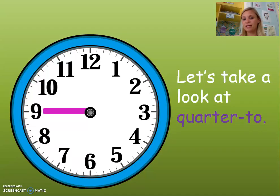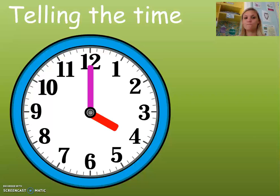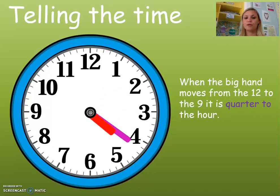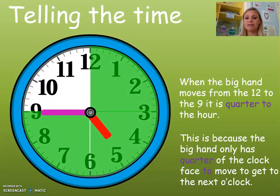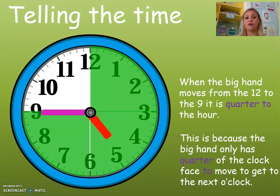The last one we're going to look at is quarter to. When the big hand moves from the 12 to the 9, it is quarter to the hour. This is because the big hand only has a quarter of the clock face left to move to get to the next o'clock. You can see the white part — we've got one more quarter to go.